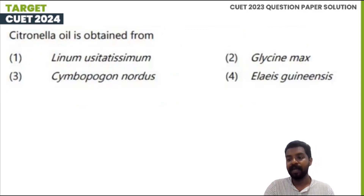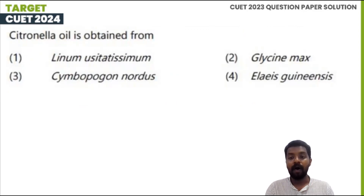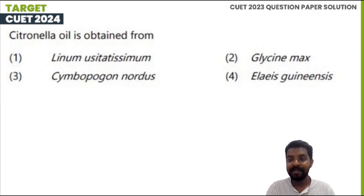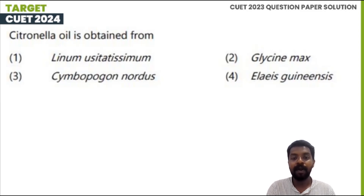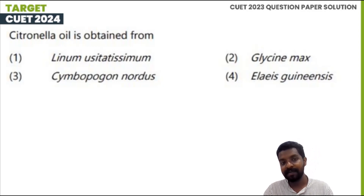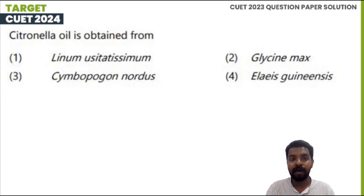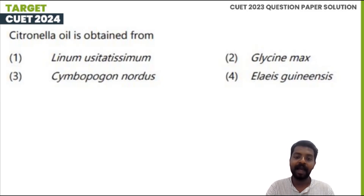Citron oil is obtained from Linium. The options are: 1. Linium lucidase, 2. Glycine max, 3. Cymbopogon nardus, 4. L. varieties. Citron oil is obtained from Cymbopogon nardus. Option 3 is correct.